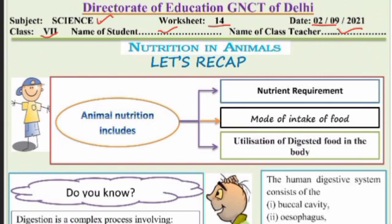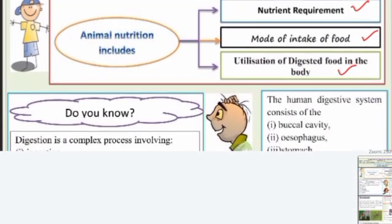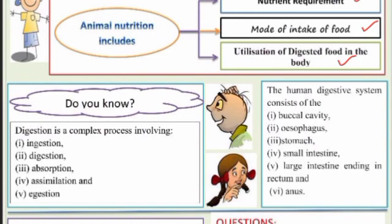The worksheet topic is nutrition in animals. Let's recap — animal nutrition includes nutrient requirement, mode of intake of food, and utilization of digested food in the body.